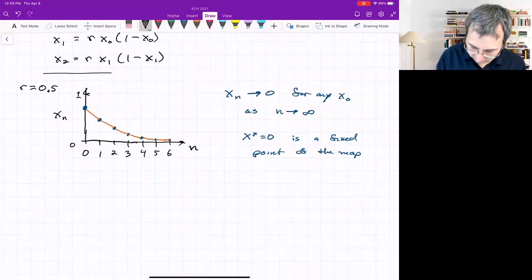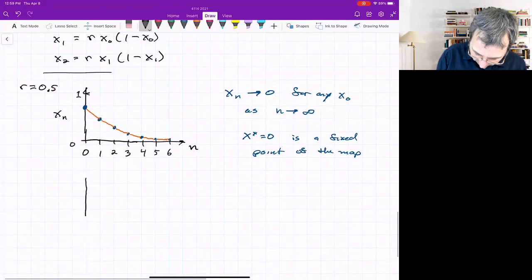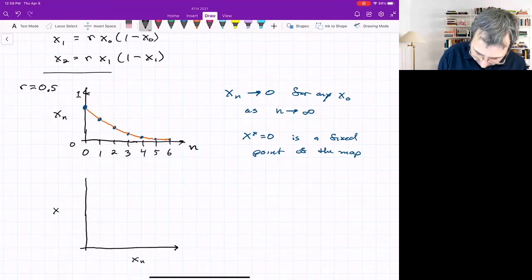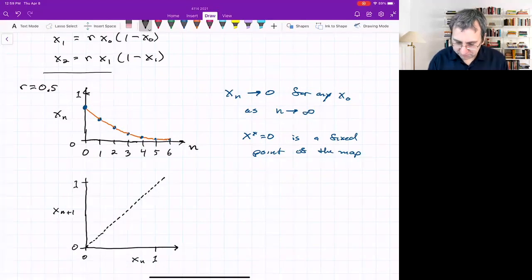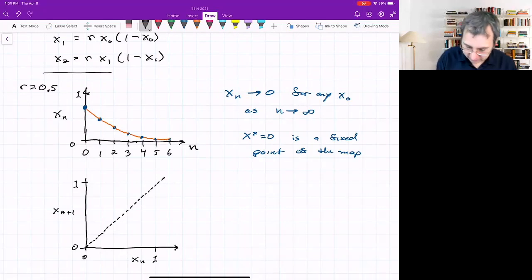We can think of this in terms of the cobweb plot. We write X_n, X_{n+1}, draw the diagonal 45 degree line. For r=0.5, this thing rises to only the level of r/4, so 1/8. Other than at the origin, it does not intersect that 45 degree line.